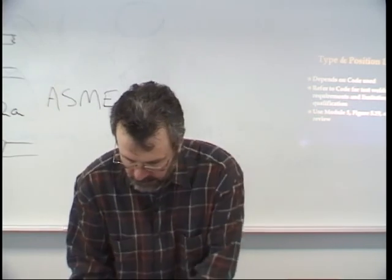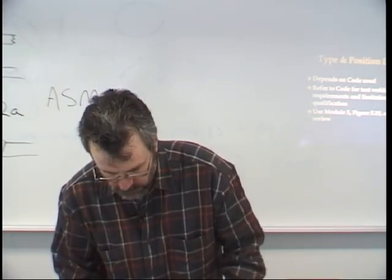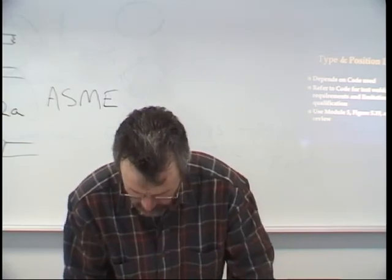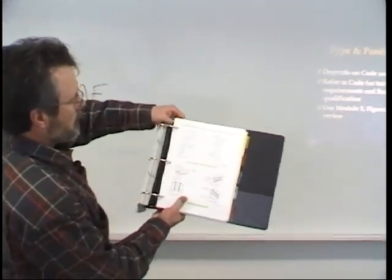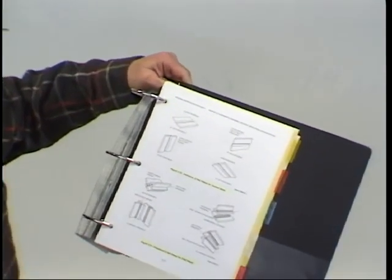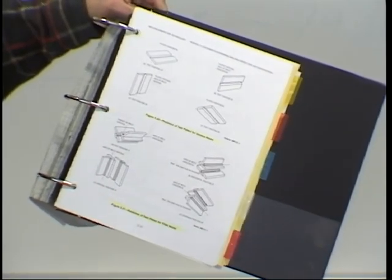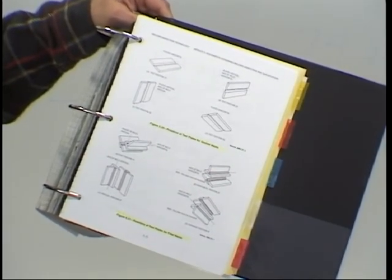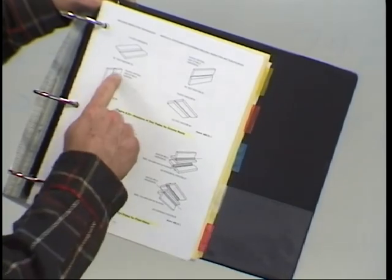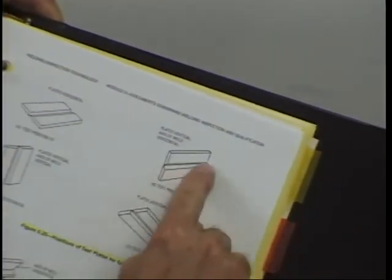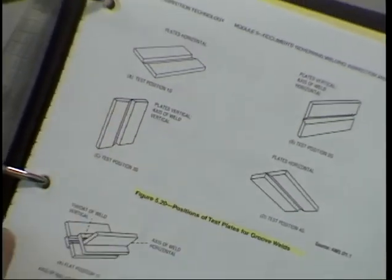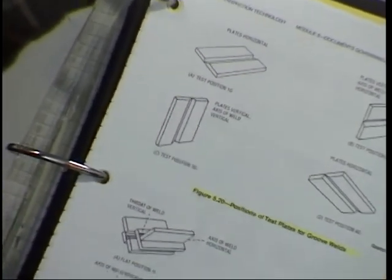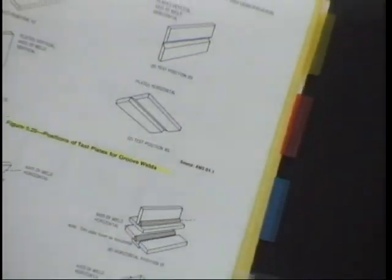Turn to page 531 to review weld positions. The G stands for groove; F stands for fillet. For plate groove welds: 1G is flat, 2G is horizontal, 3G is vertical (must specify vertical up or vertical down progression), and 4G is overhead. For plate fillet welds: 1F is flat, 2F is horizontal (set straight on the tabletop), 3F is vertical, and 4F is overhead.